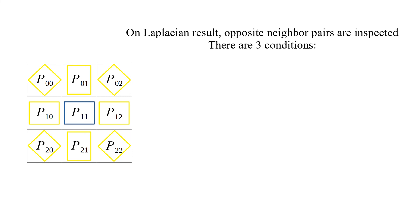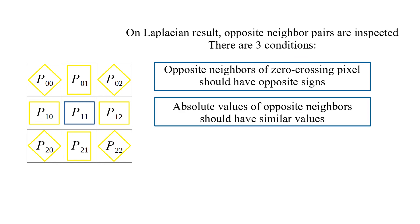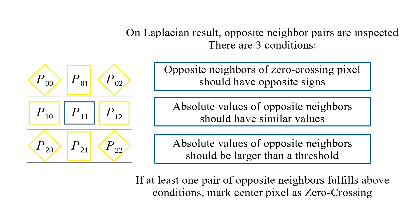There are three conditions. Opposite neighbors of zero-crossing pixels should have opposite signs. Absolute values of opposite neighbors should have similar values. And absolute values of opposite neighbors should be larger than a threshold. If at least one pair of opposite neighbors fulfills above conditions, then center pixel is marked as zero-crossing.